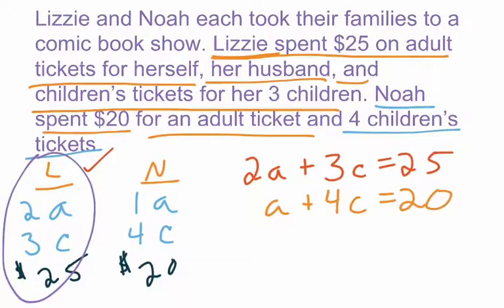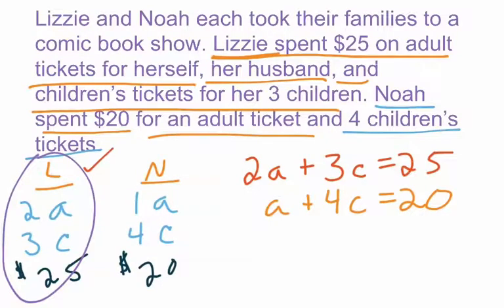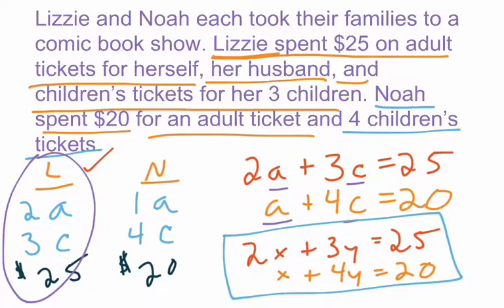With Desmos, you need to make sure your variables are X and Y. The A and the C — it doesn't really matter what your variables are. I kept them as they made sense in the word problem, but I can rewrite the whole system as 2X plus 3Y equals 25, and the second equation as X plus 4Y equals 20. That's what I'm going to do in this case, because this is how we have to plug it into Desmos.